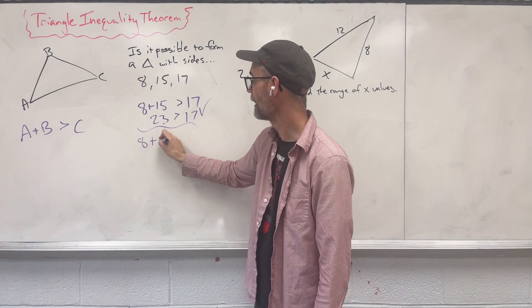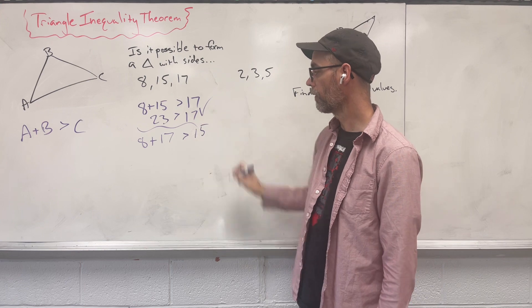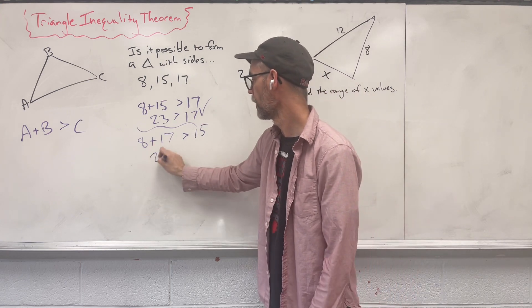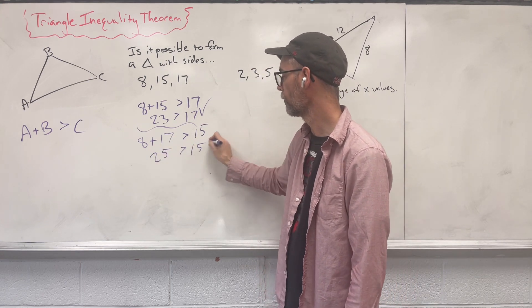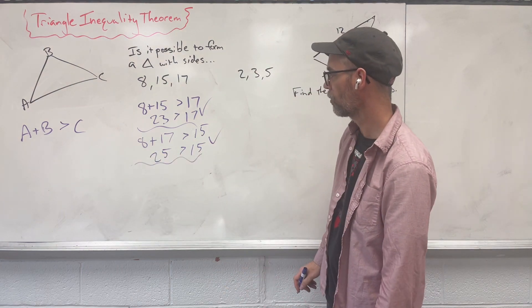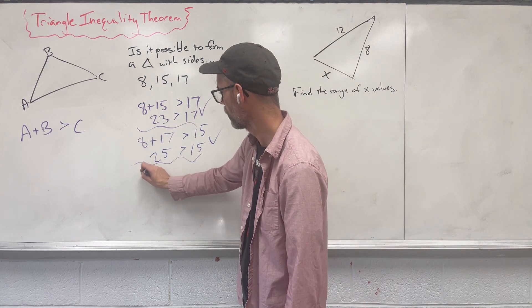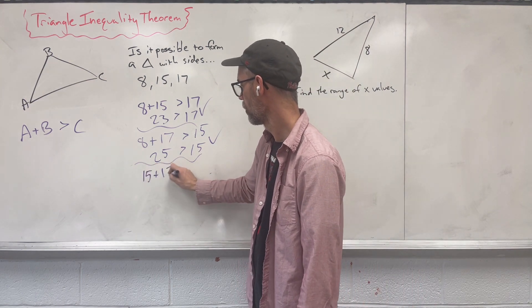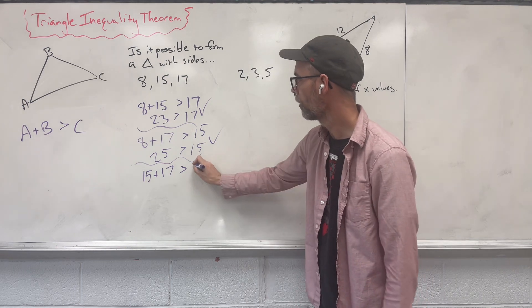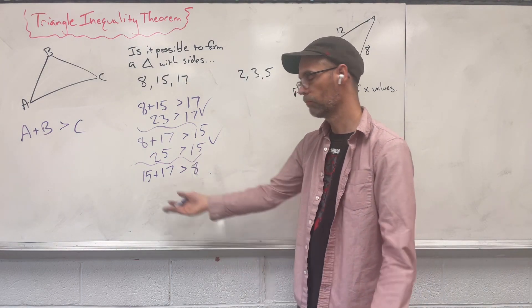We're going to say 8 and 17 has to be larger than 15. We get 25, which is bigger than 15. Yes, that's good. And the last combination would be 15 and 17. Is that larger than 8? Well, yes.